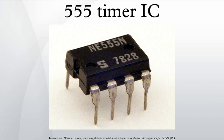The NE555 parts were commercial temperature range, 0°C to +70°C, and the SE555 part number designated the military temperature range, -55°C to +125°C. These were available in both high-reliability metal can and inexpensive epoxy plastic packages. Thus the full part numbers were NE555B, NE555T, SE555B, and SE555T.